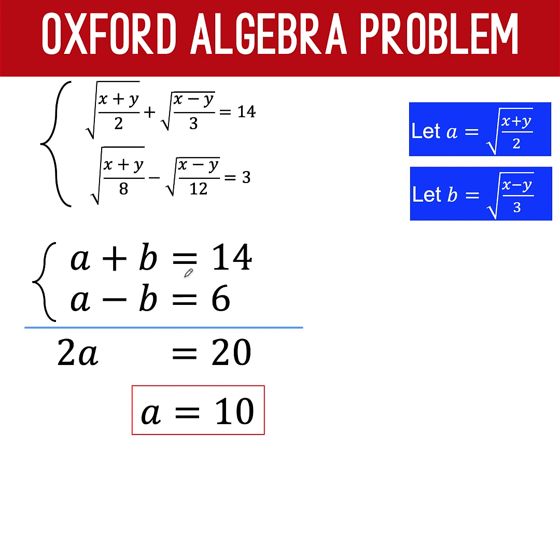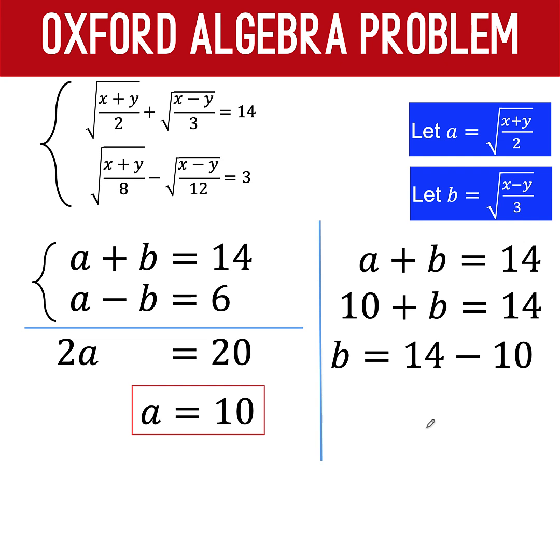Now, to solve for b, let's take again the first equation. a plus b equals 14. But this time, we now know that a is equal to 10. And so, solving for b, b is 14 minus 10. Or b is equal to 4.